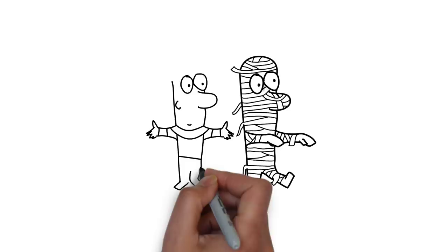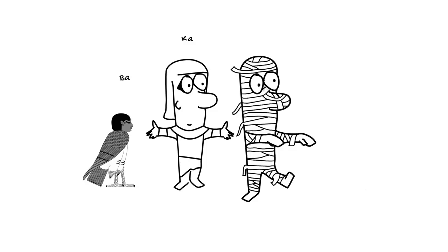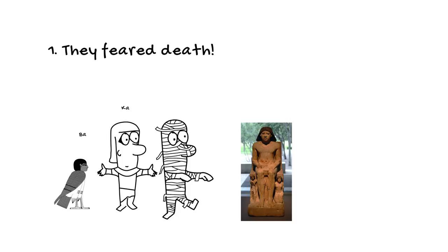The Ka and the Ba could separate from the body after death, but they needed the body or an image of the person, such as a statue, to act as a home base after death. This would allow the person to make the difficult journey through the afterlife and be able to live there forever.